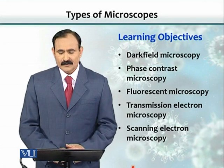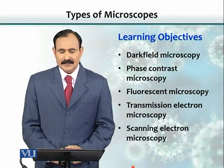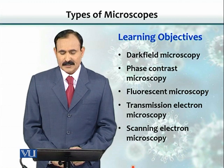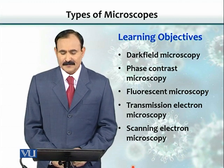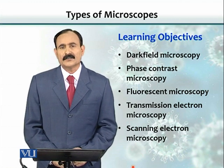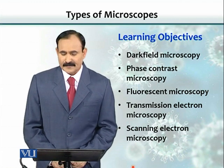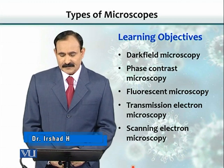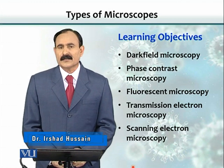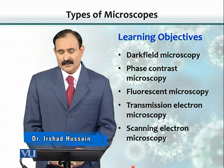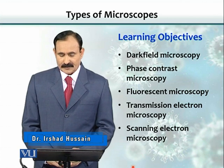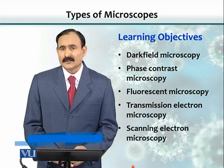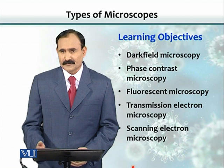Learning objectives include various types of microscopes: dark field microscopy, phase contrast microscopy, fluorescent microscopy, transmission electron microscopy, and scanning electron microscopy. There are many others also, but we would go through only a few of these.